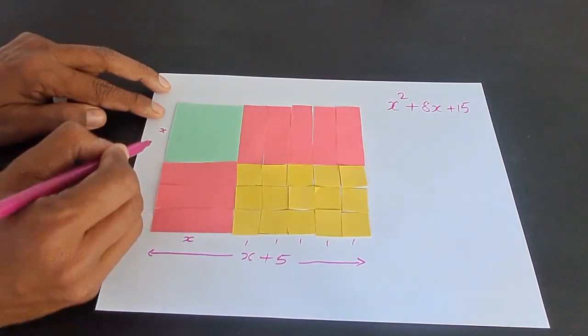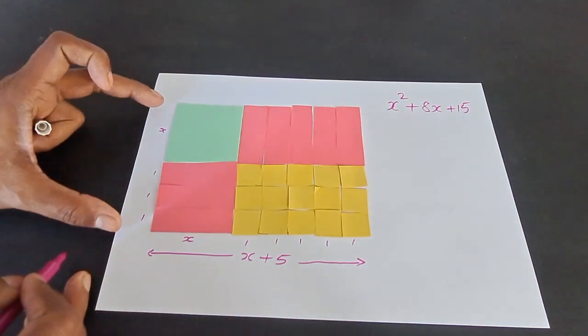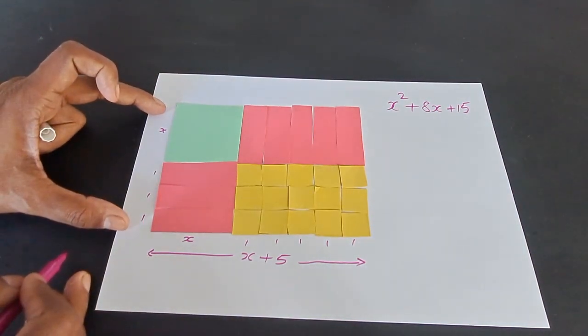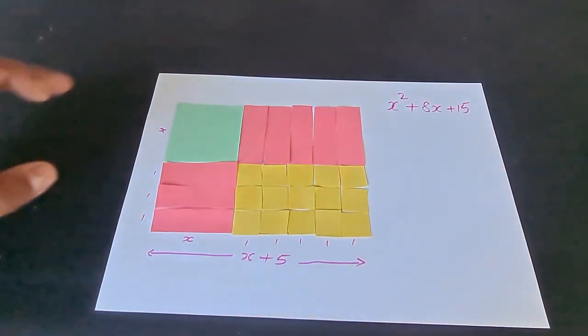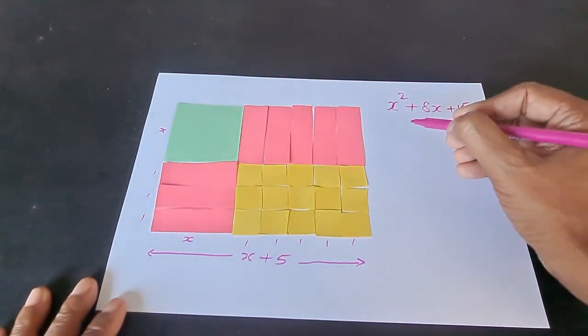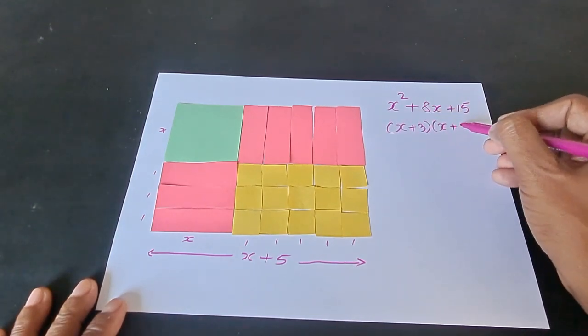this is x, this is 1, 1 and 1. And therefore, this will be x plus 3. And therefore, the area of the entire rectangle will be x plus 3 times x plus 5.